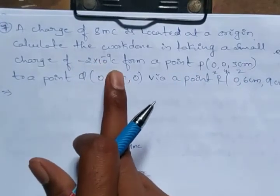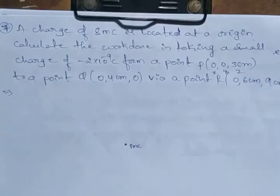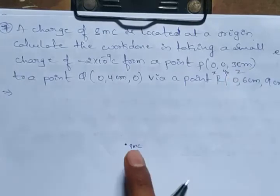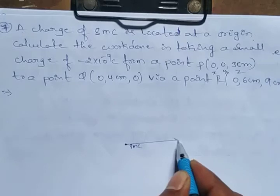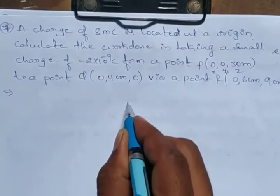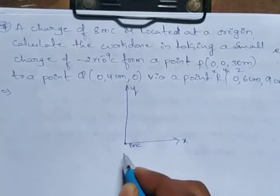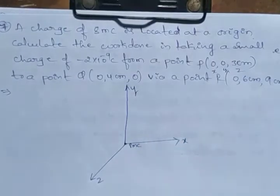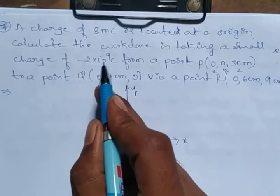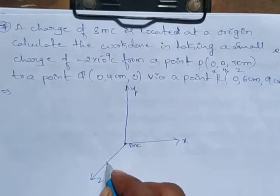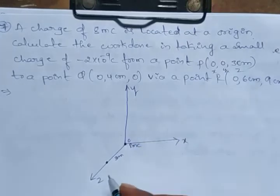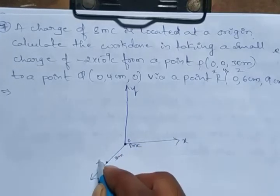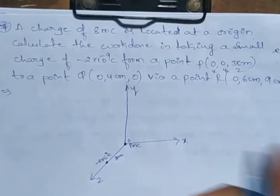The minus 2 into 10 power minus 9 Coulomb charge is here on the z-axis at 3 centimeters, and this is the origin. Now the coordinate system has x, y, and z axes. The charge of minus 2 into 10 power minus 9 Coulombs is at distance 3 centimeters, that is point P at (0, 0, 3 cm).